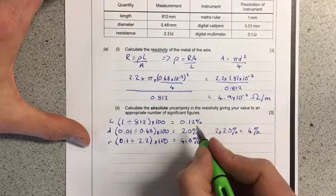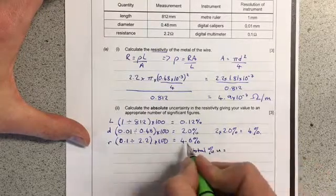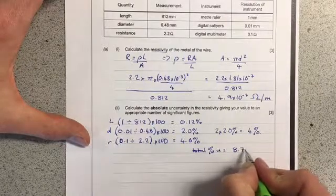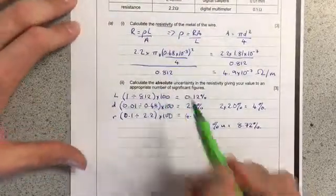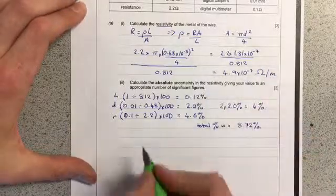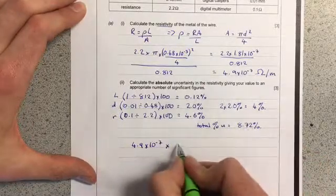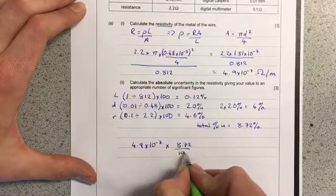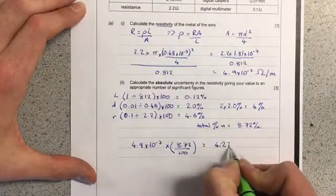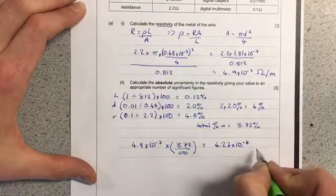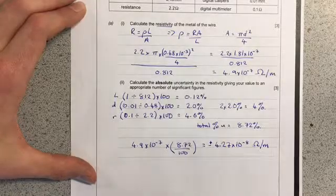Adding them up, the total percentage uncertainty equals 4 plus 4.6 plus 0.12, which is 8.72%. But we need the absolute uncertainty, so I take my answer of 4.9 times 10⁻⁷ and find 8.72% of it. That's 8.72 divided by 100, which equals 4.27 times 10⁻⁸ ohms per meter. Since it could be bigger or smaller, I'll put plus or minus in front.